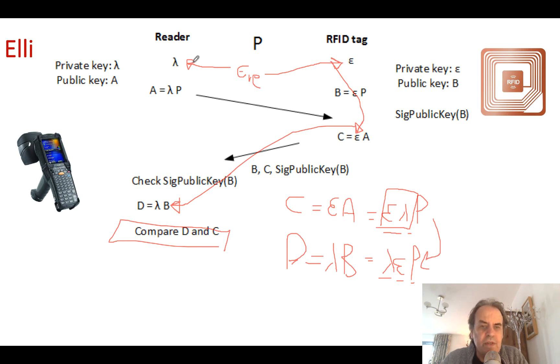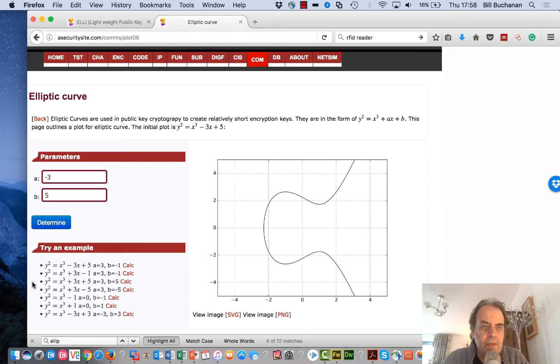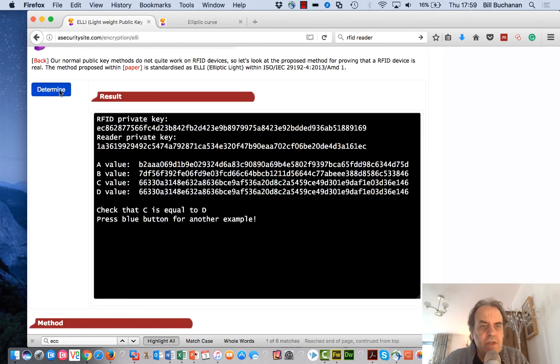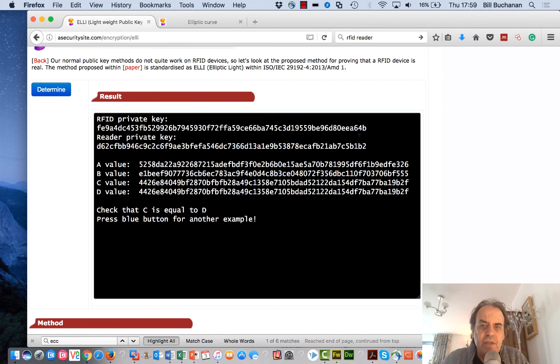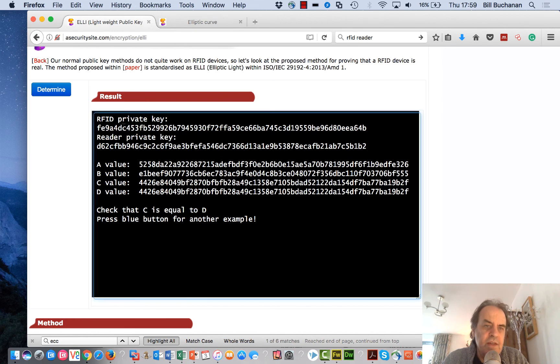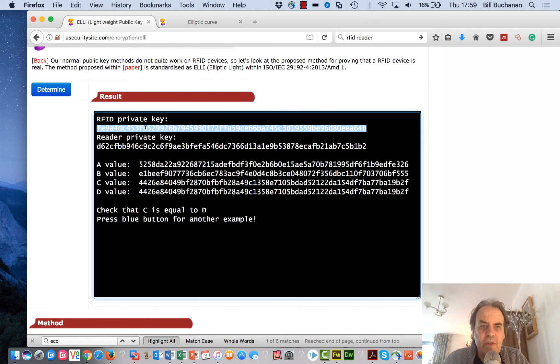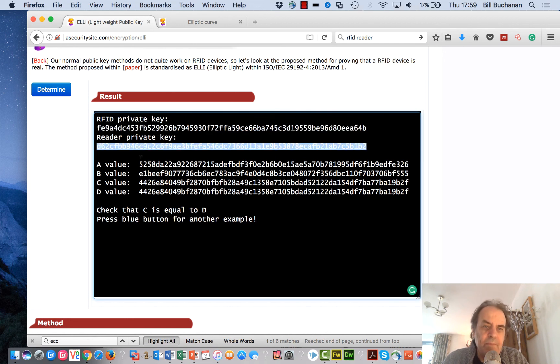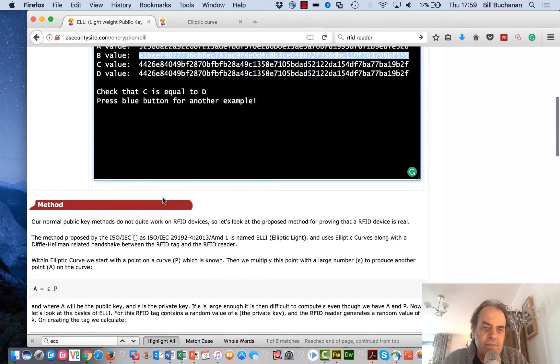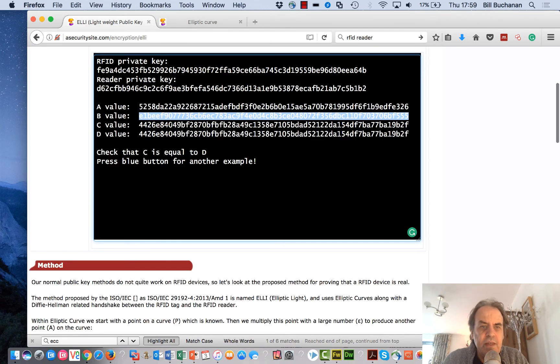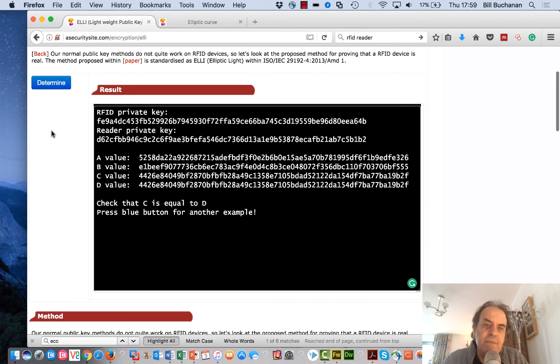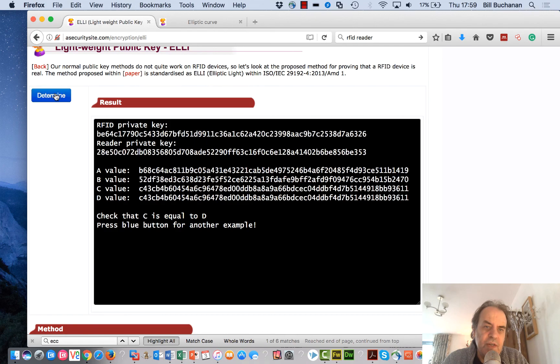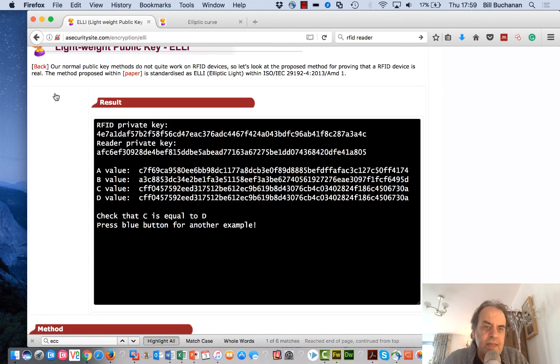Okay, so let's look at an example. Let's generate our private key. In this case, this is the key that would go into the private key. This is epsilon, this is lambda. There's the A value, B value that's created. And then in the end we get C and D which are the same. So we've actually proven the device. We can try lots of different values, but that's what we get.